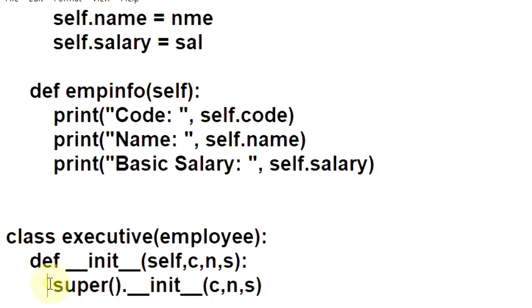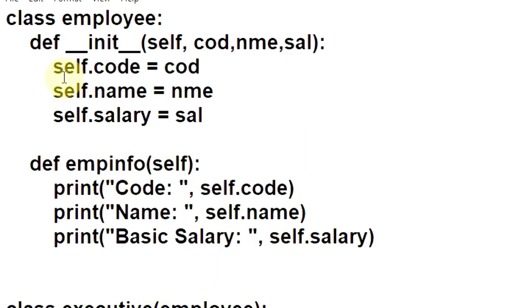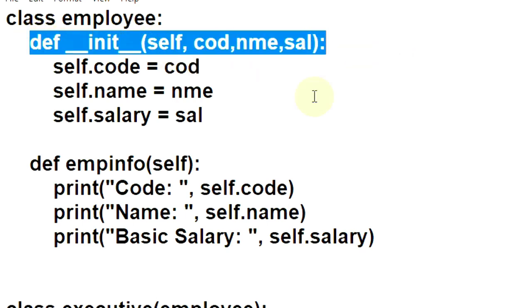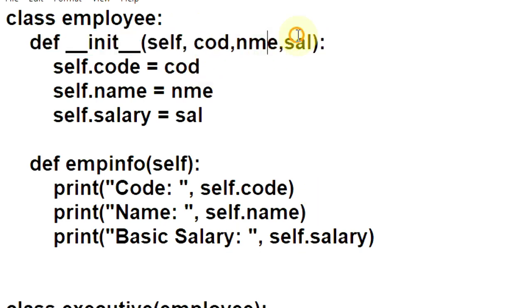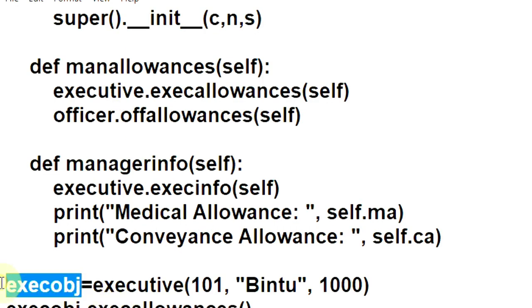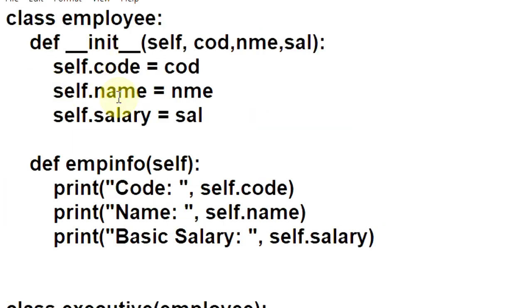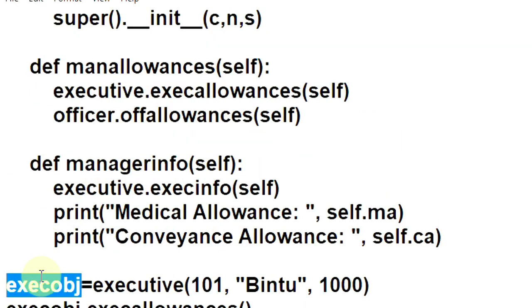Starting from the main function: an object exec_obj of Executive class is created with arguments 101, bin2 and 1000. On seeing three arguments, the Python compiler looks for a parameterized constructor in the Executive class and jumps to it. The values 101, bin2 and 1000 are assigned to parameters c, n and s — representing code, name and salary. From there, the parameterized constructor of the superclass Employee is invoked, and the values are assigned to code, name and salary instance attributes of exec_obj.